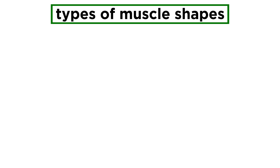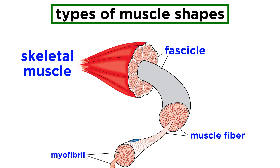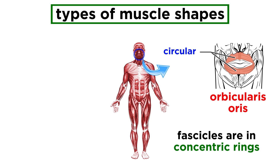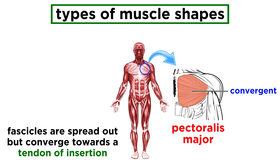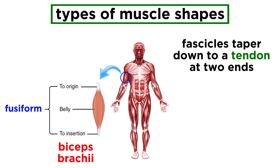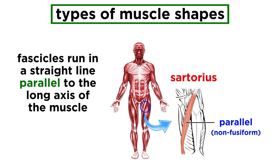Now let's look at different muscle shapes. The fascicles of a muscle — which are bundles of muscle fibers — can arrange themselves in a variety of ways to produce muscles in a variety of shapes. If in concentric rings, we get a circular muscle, like the ones around the eyes and mouth. If they are spread out over a region but all converge towards a tendon of insertion, that is a convergent muscle, like the pectorals. If they taper down to a tendon at two ends, that is called fusiform, like the biceps. If the fascicles run in a straight line parallel to the long axis of the muscle, that is a parallel arrangement, like with the sartorius muscle found in the thigh.